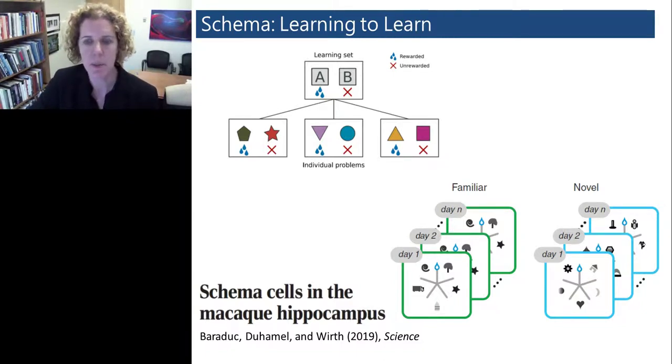In our U19 program, we're using innovative techniques for recording in monkeys. We're also using single unit recordings in human epilepsy patients. We're capitalizing on the unique opportunity to establish cross species comparisons of hippocampal neocortical interactions.